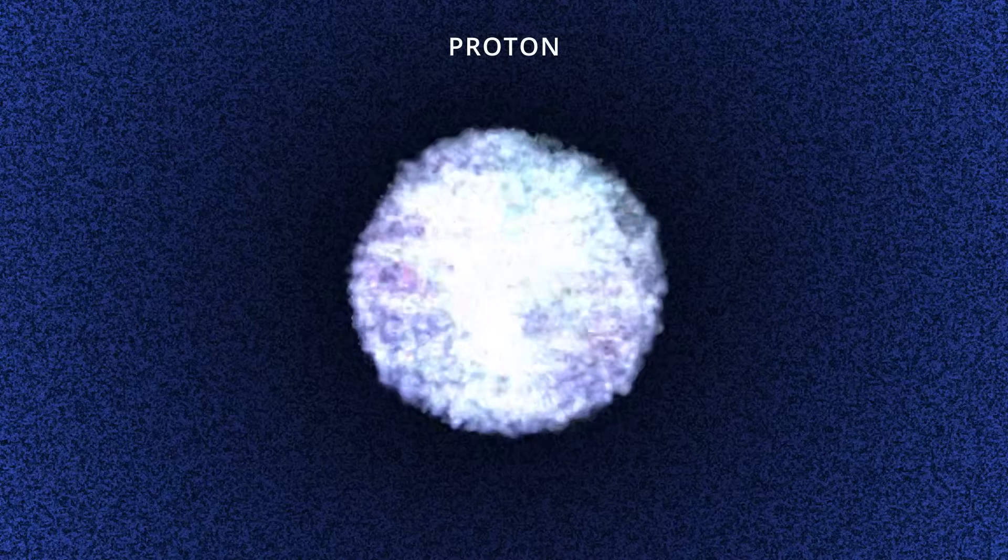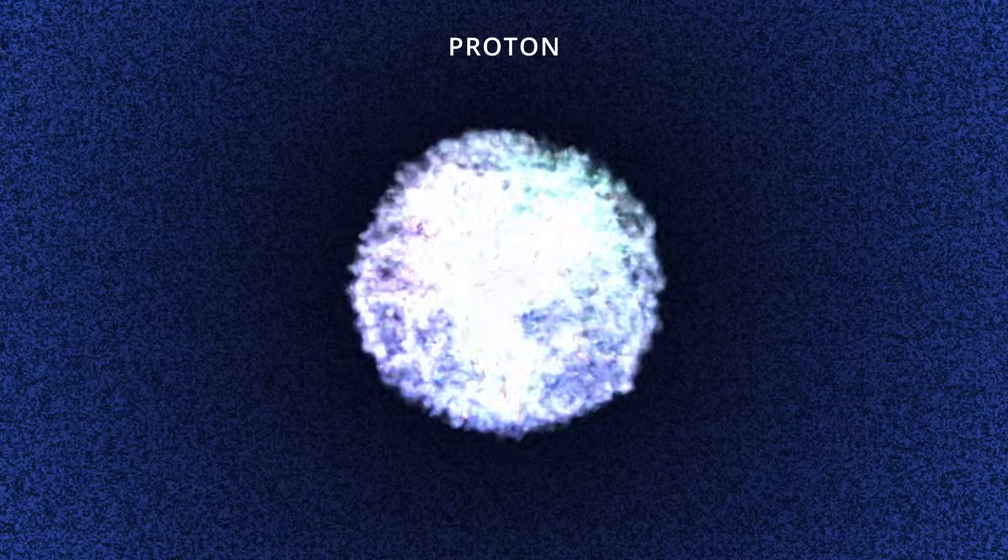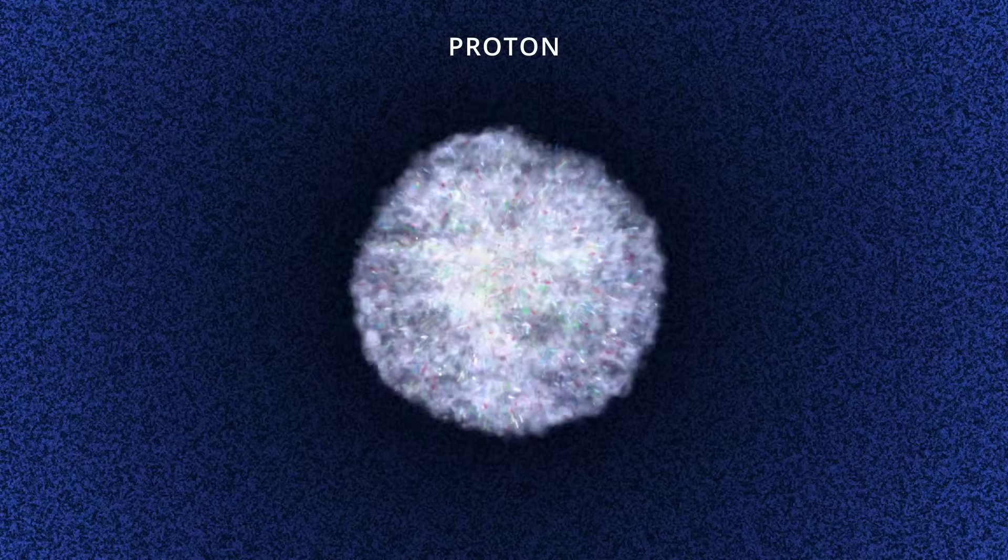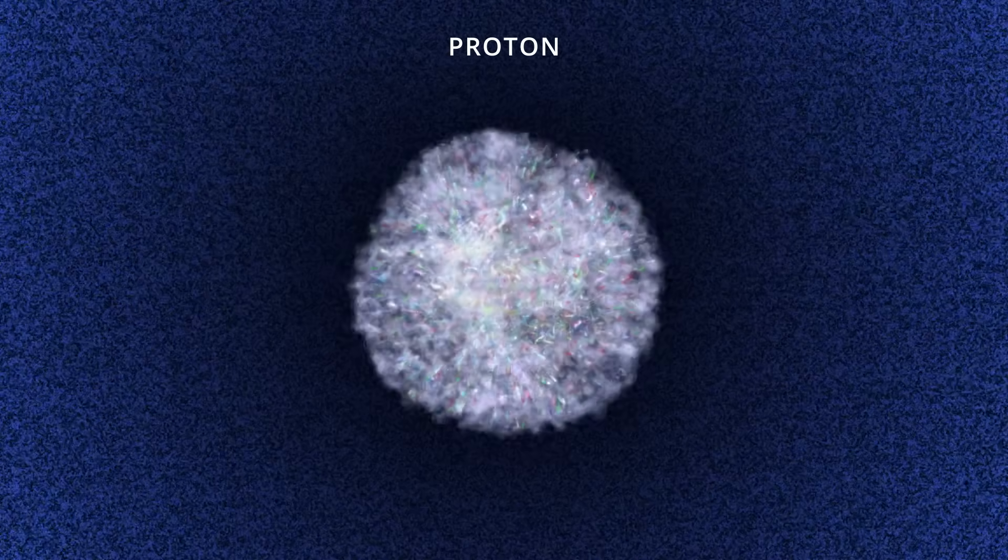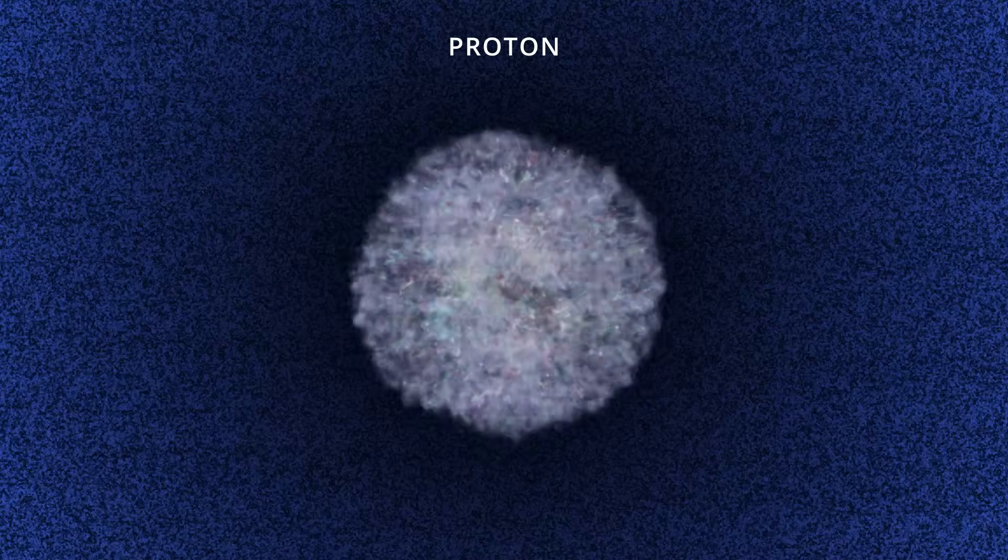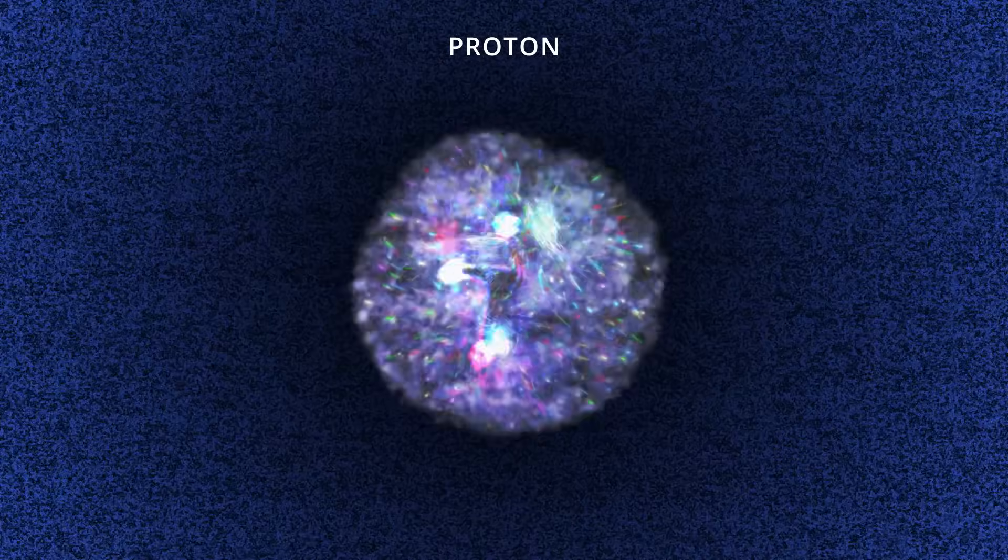At a high shutter speed, we see an ocean of gluons. At a medium shutter speed, we see a sea of gluons and quark-antiquark pairs. And at a low shutter speed, we see the dominance of the valence quarks.